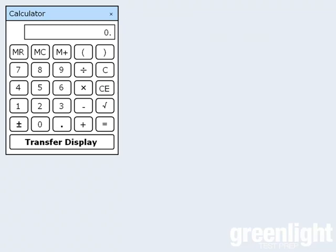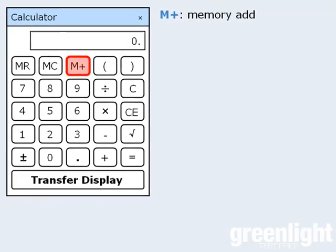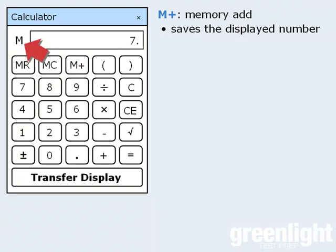The last set of buttons to discuss are these ones up here. They allow us to store and retrieve numbers in the calculator's memory. We'll begin with the memory add button. This button has two different roles. The first time you press it, it saves whatever number is in the display at that time. To demonstrate this, let's enter 7 and then click the memory add button. At this point, the calculator has stored the number 7 in its memory.